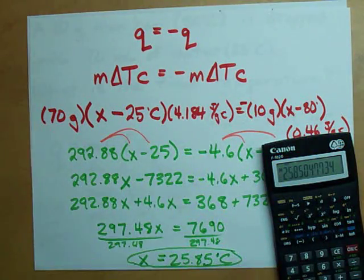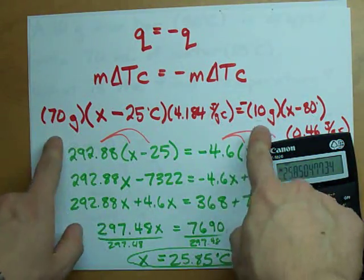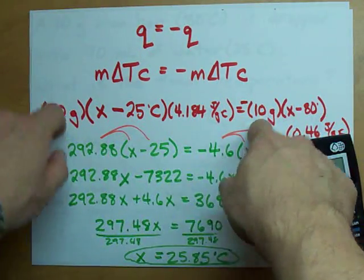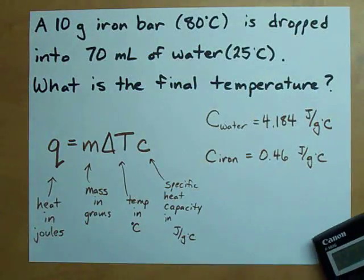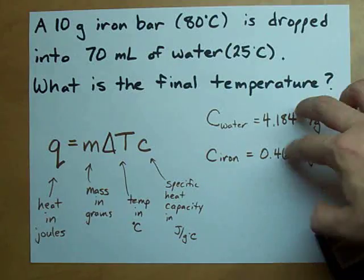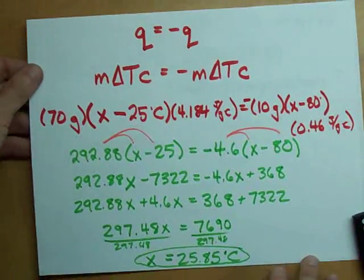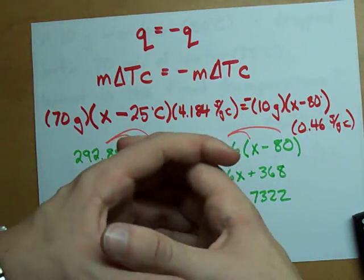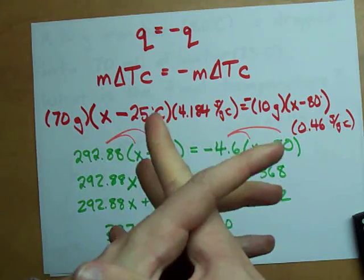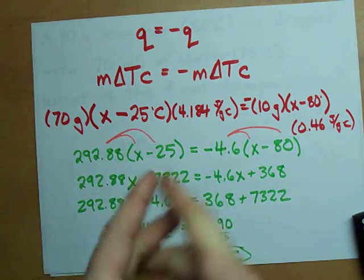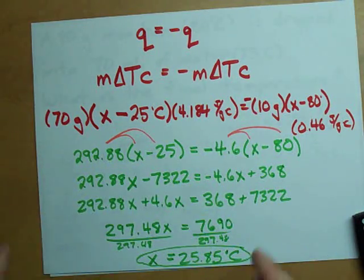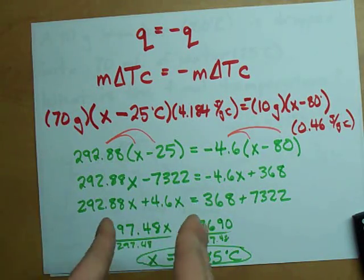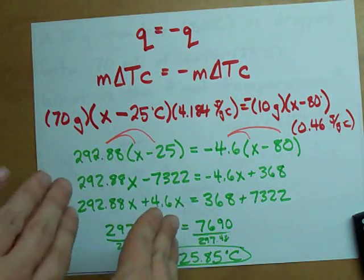Why is it so close to 25 degrees? Well, we had seven times as much water, and the heat capacity of water is ten times as much as it is for iron. So the water is going to hold on to its heat or be more resistant to absorbing heat than the iron is to giving it away, and that's why the temperature change is more in the water's direction.